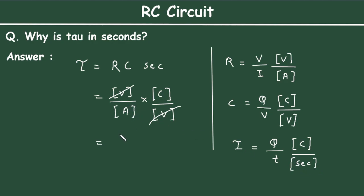If we substitute this, it becomes Coulomb divided by ampere. In place of ampere, we substitute [C/s], that is Coulomb per second. Now the Coulomb terms cancel, so what remains is seconds.